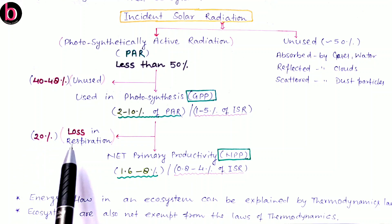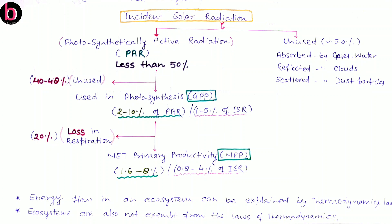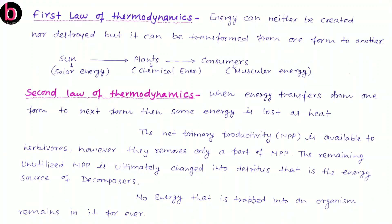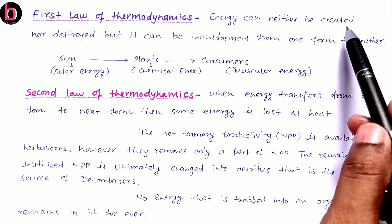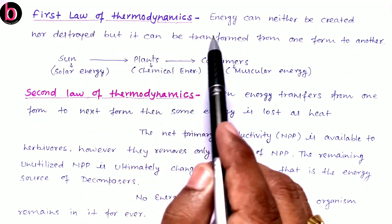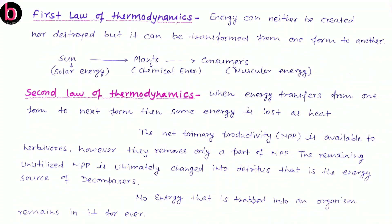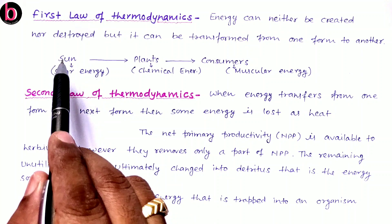There is a 20 percent loss by producers for their respiration. Energy flow in any ecosystem can be better explained by the laws of thermodynamics — ecosystems are not exempt from these laws. According to the first law of thermodynamics, energy can neither be created nor destroyed, but it can be transformed from one form to another. The sun is the primary source of energy for all ecosystems on Earth, except the deep sea hydrothermal ecosystem.